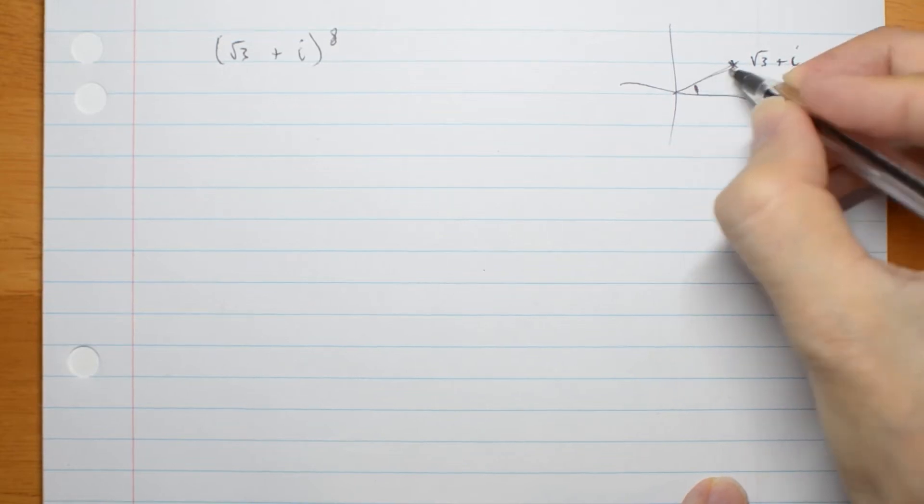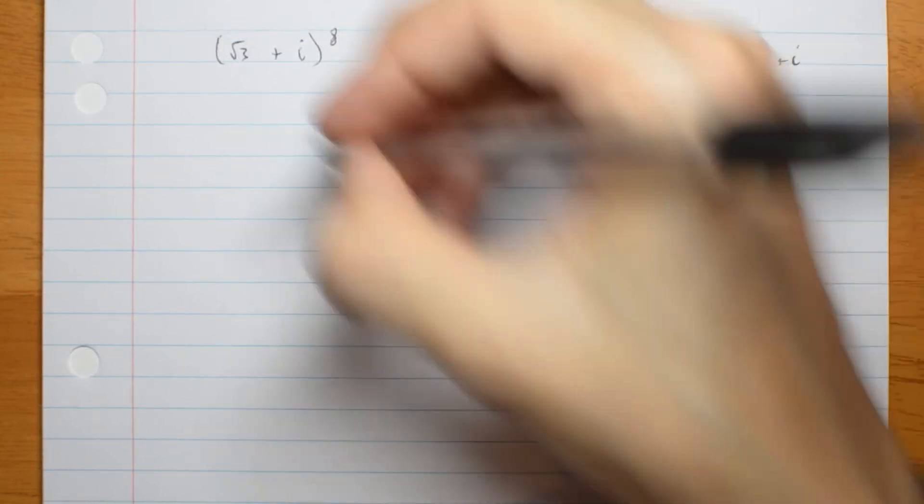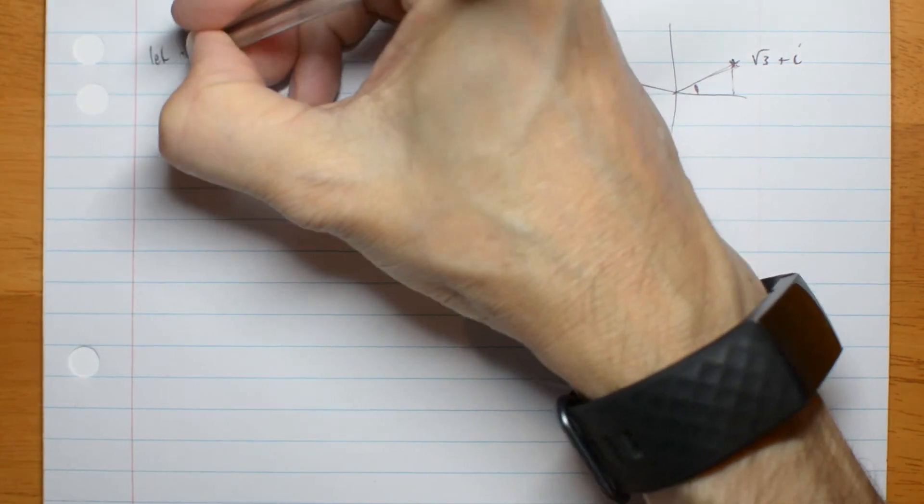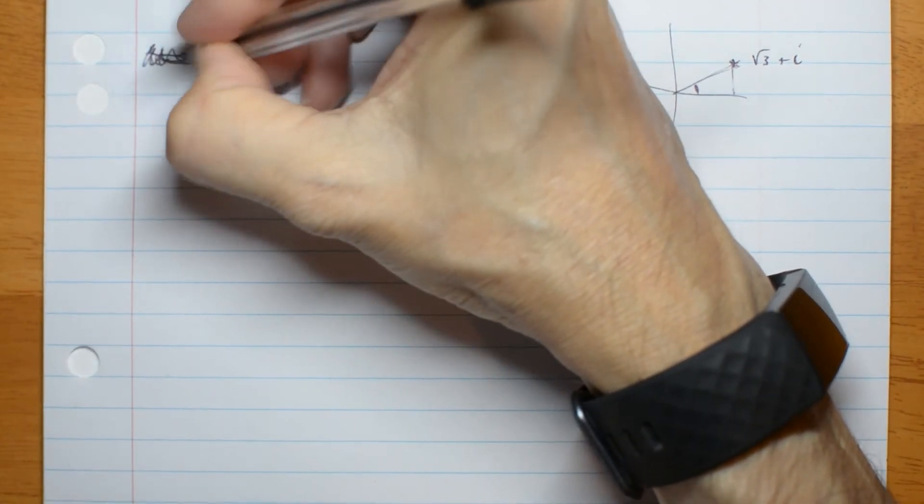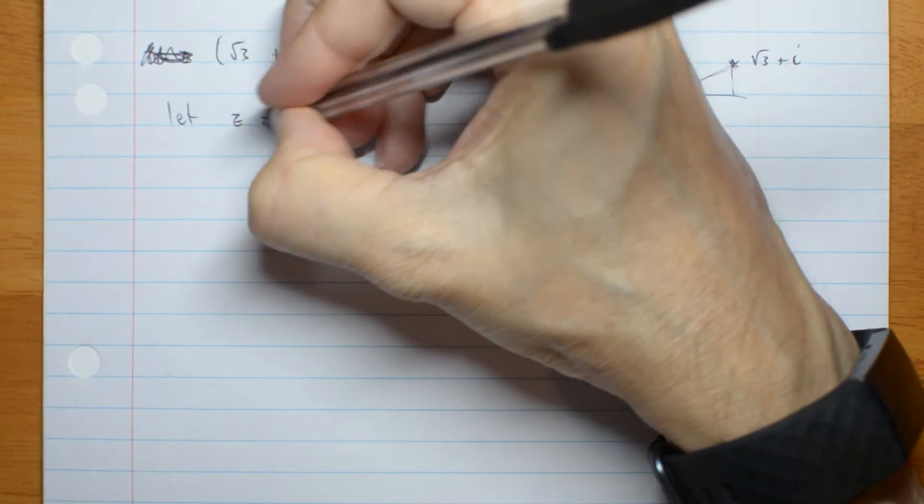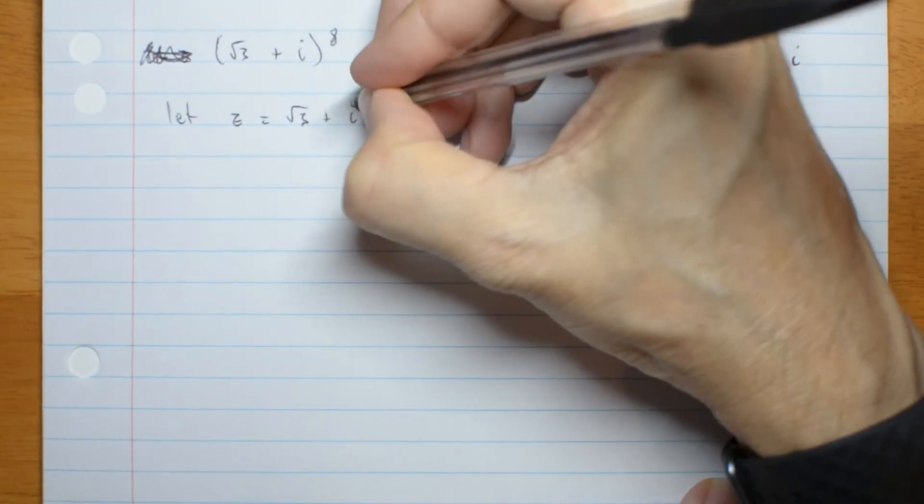So what's the length here? Well, let z equal root 3 plus i.